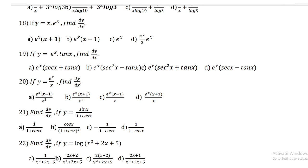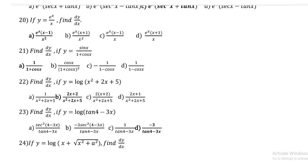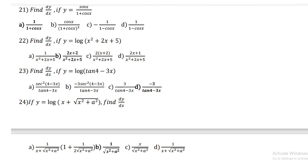If y = sin x / (1 + cos x), then dy/dx = 1 / (1 + cos x). Find dy/dx if y = log(x² + 2x + 5); the answer is (2x + 2) / (x² + 2x + 5). Find dy/dx if y = log(tan(4 − 3x)); the answer is −3 / tan(4 − 3x). If y = log(x + √(x² + a²)), then dy/dx = 1 / √(x² + a²).